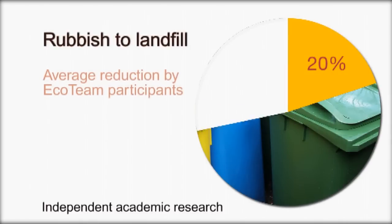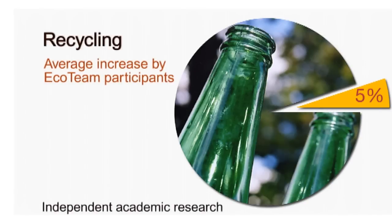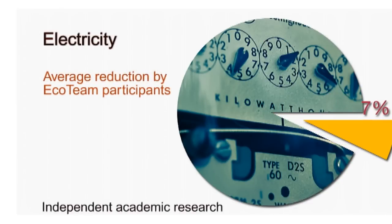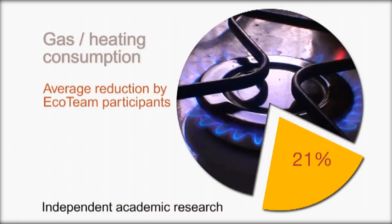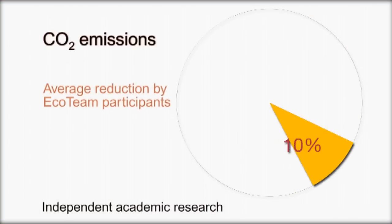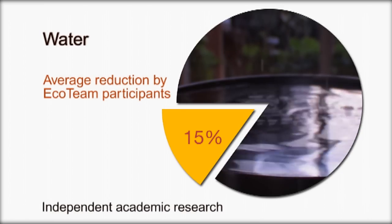Through ECO Teams, households have made some incredible changes to their carbon footprint. Households have reduced their rubbish by an average of 20%, increased their recycling by an average of 5%, reduced their electricity consumption by an average of 7%, and their gas and heating energy consumption by an average of 21%. They've reduced their overall carbon emissions by an average of 17%, and reduced their water consumption by an average of 15%.